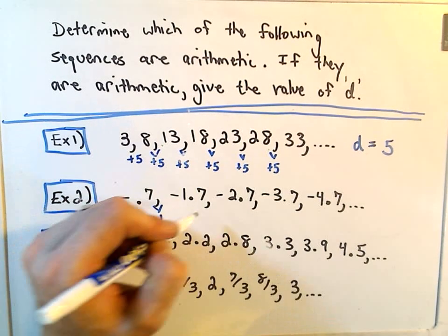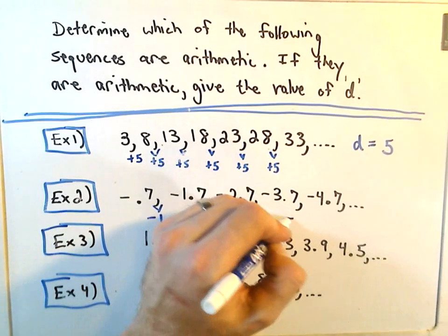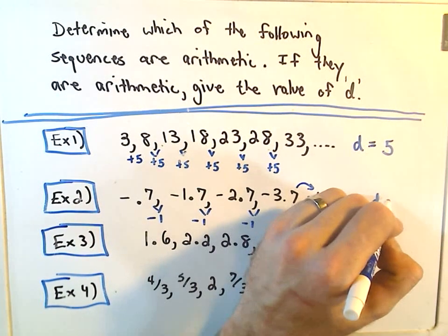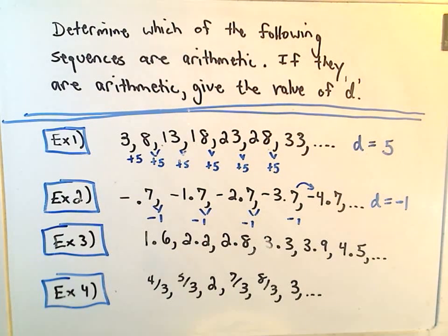In this case, every term is differing. You have to subtract 1 to get to the next term. So in this case, we would say yes, this is arithmetic. And our d value equals negative 1.